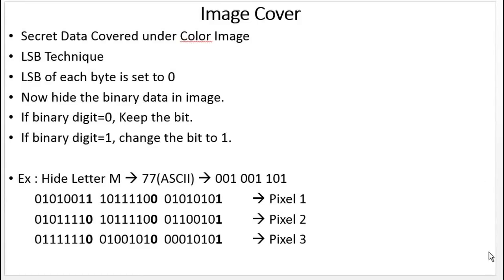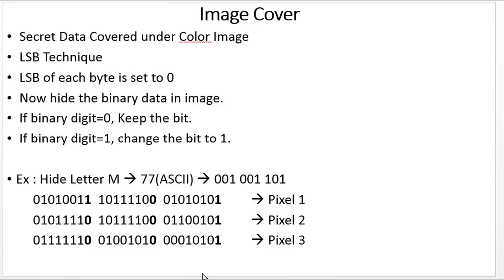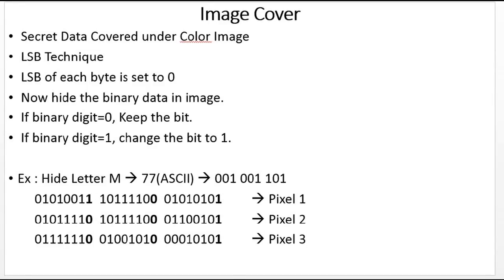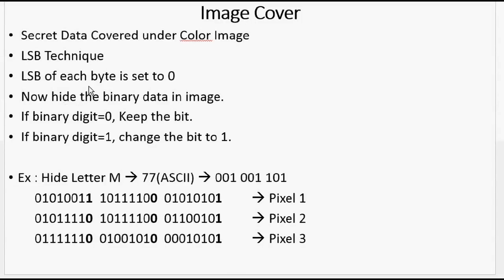The next steganographic method is image cover. This is similar to text cover, except the secret data is covered by an image instead of text. For this we use the LSB technique, that is, the least significant bit technique. As we know, each image is made up of pixels and each pixel represents a combination of colors. Since the image is made up of thousands of pixels, changing the border pixels — specifically the least significant bits of the border pixels — won't affect the image much. The method involves setting the least significant bits of the border pixels to zero, and then hiding the binary data: if the binary digit is zero, keep the bit; if the binary digit is one, change the bit to one.